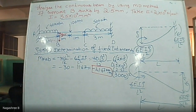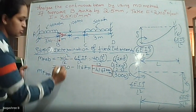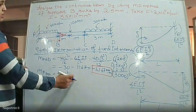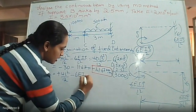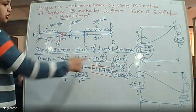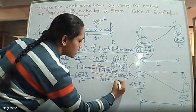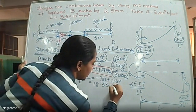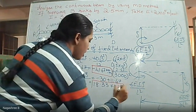For MFBA: due to UDL it is +WL²/12 = +30 kNm. The sinking term is still −6EI·δ/L² = −11.67 kNm (anticlockwise, same second condition applies to both ends). Therefore MFBA = +30 − 11.67 = +18.33 kNm.